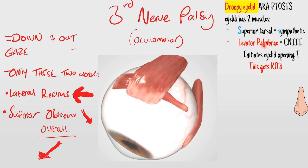The function of this muscle - you might be asked to recall it in an exam - is that it initiates eyelid opening; that's the first step of your eyelid opening. So damage to the third nerve also causes a droopy eyelid because of this.